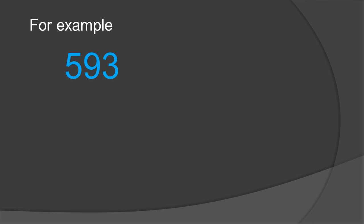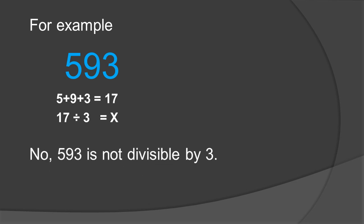The second example is 593. According to rule number 2, we split the number into digits and add them up. The sum is 17. 17 does not come in the 3 times table, so it is not divisible by 3. The answer is no — 593 is not divisible by 3.